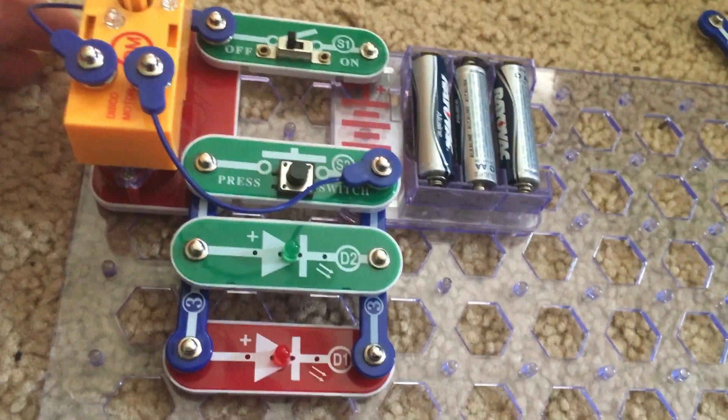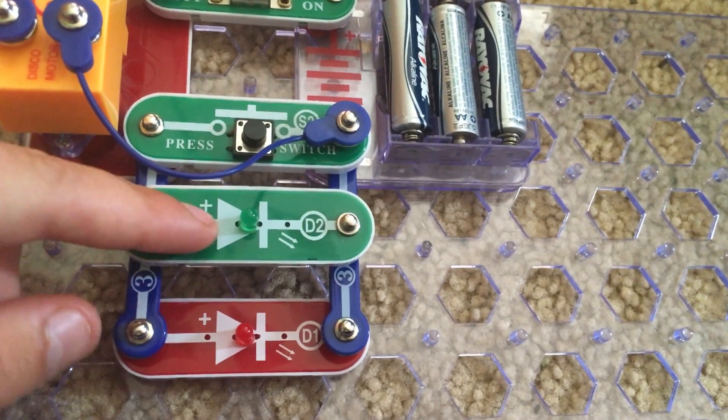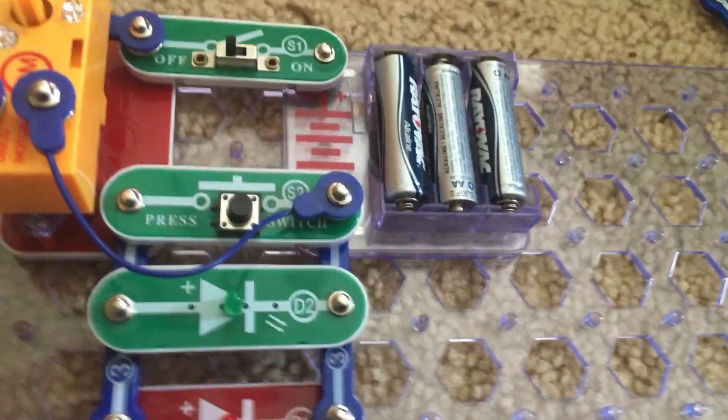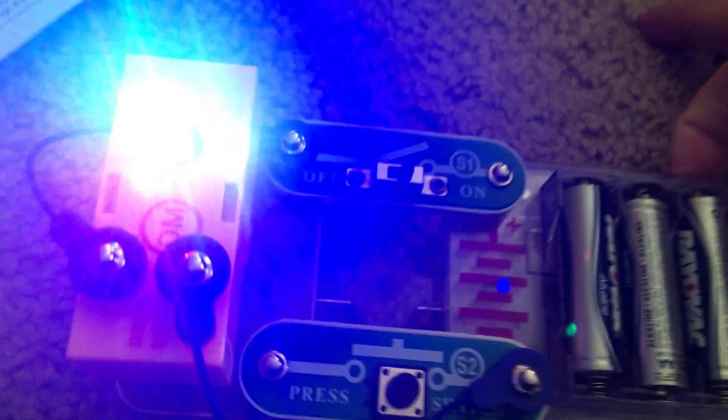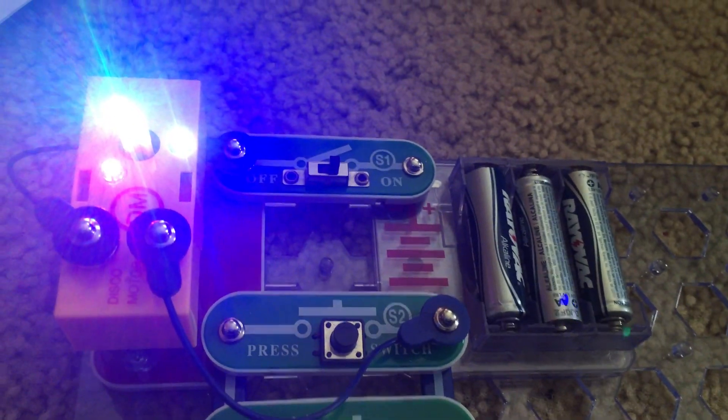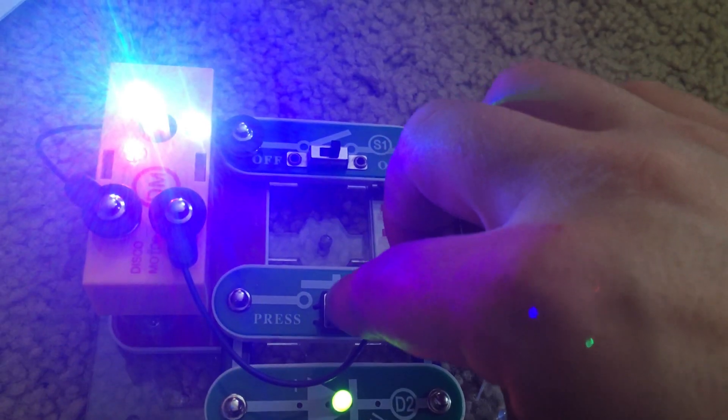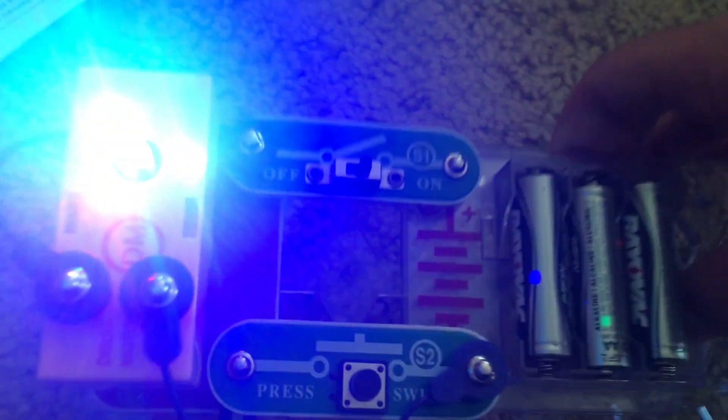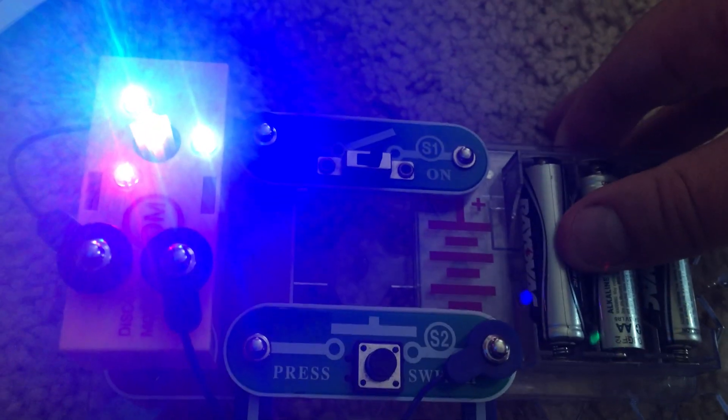Project 201 is faster push start disco. I inserted the green LED across points A and B on these three snap wires, and I am going to turn on the switch. Nothing happens other than the LEDs coming on. Now I am going to hit the press switch. When I release it, it may be very hard to tell, but the disco motor spins a little bit faster than it did in the previous project.